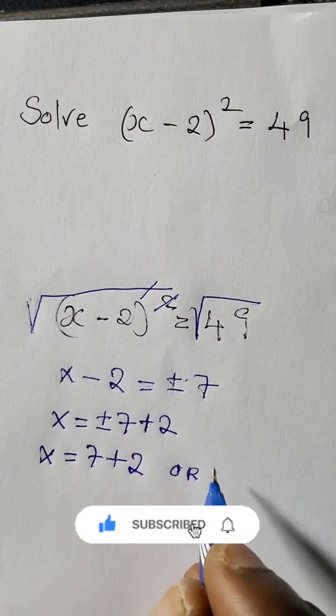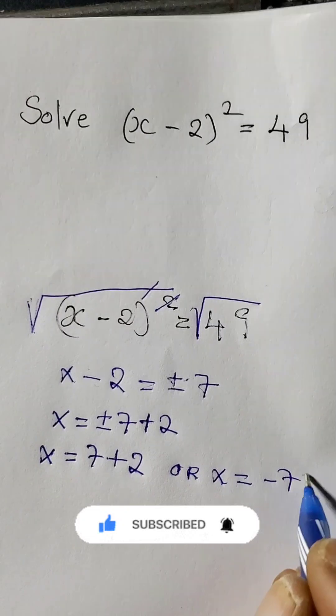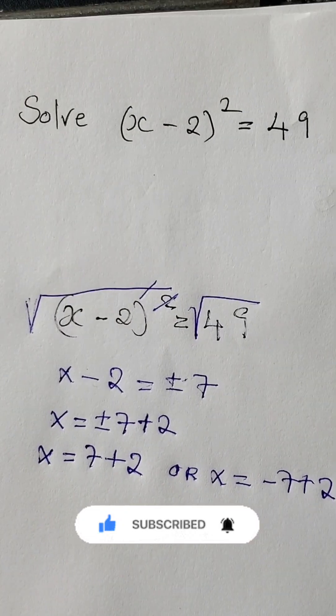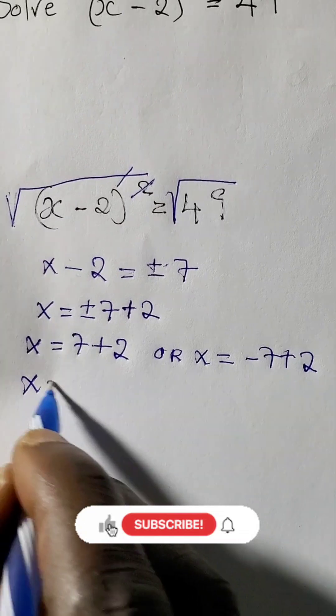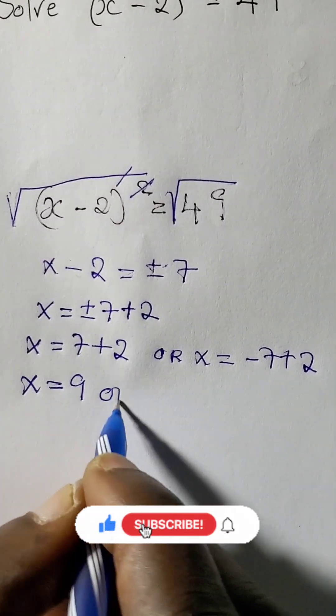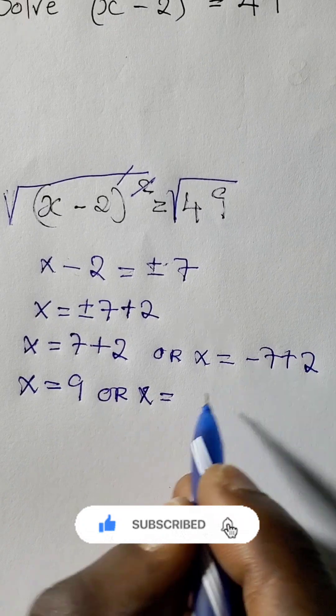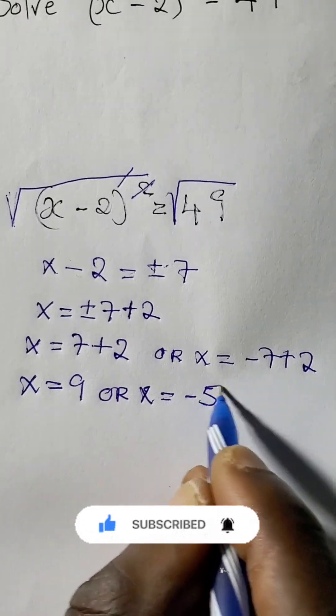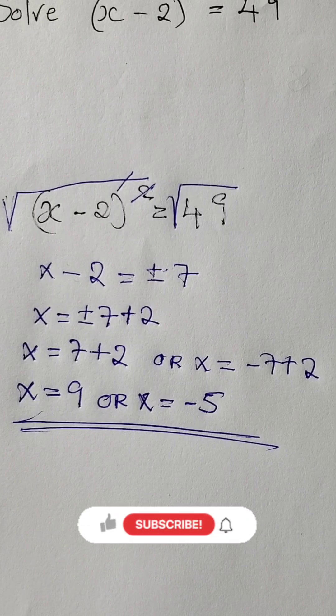Or x equals negative 7 plus 2. So x equals 9 or x equals negative 5, and this is the answer. Remember to subscribe.